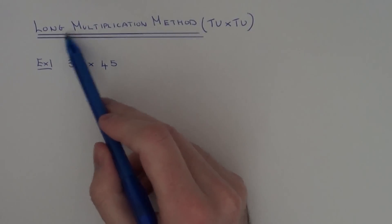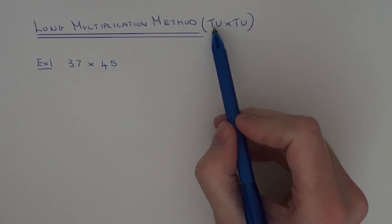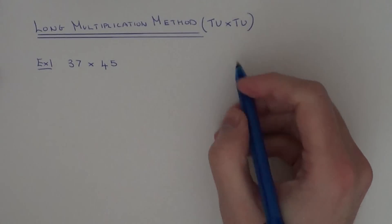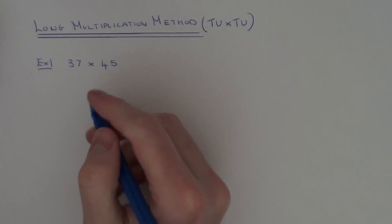Today I'm going to show you how to use the long multiplication method to multiply two two-digit numbers. So example one, we've got 37 multiplied by 45.